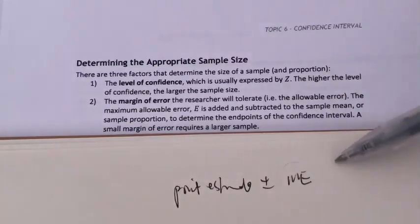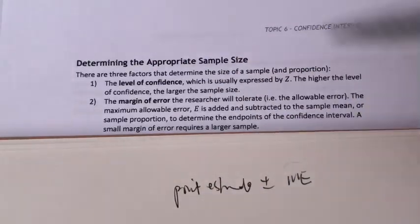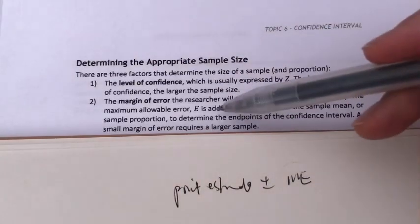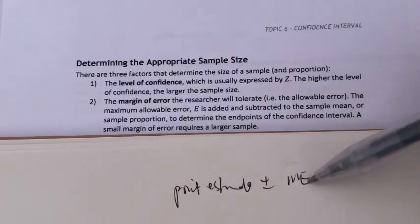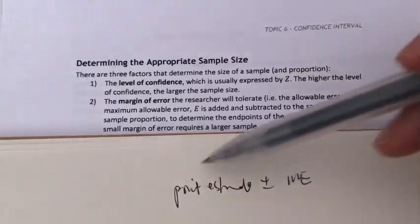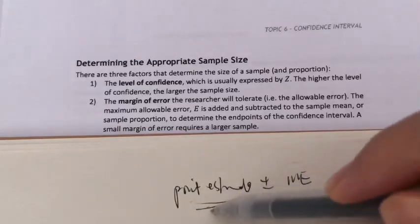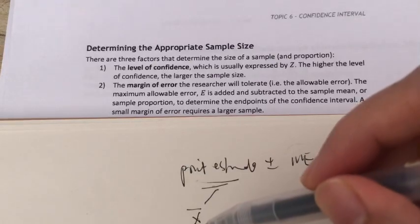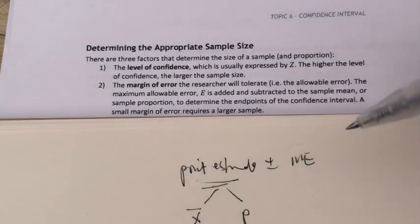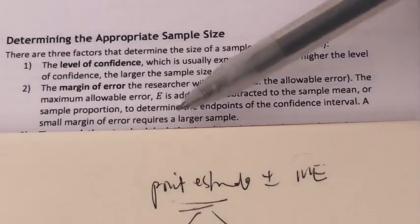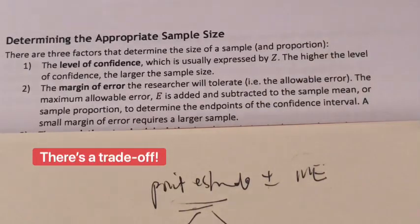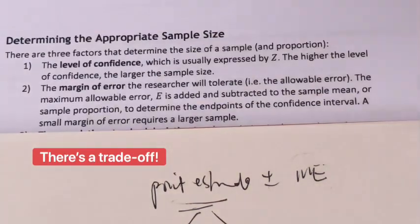It's called the margin of error. The margin of error, or E — sometimes written as E or ME — is added and subtracted from our sample mean or our sample proportion. Our point estimate here is either x-bar if you want to find the confidence interval for mu, or p if you want to find the confidence interval for pi. If you want our error to be small, then we require a large sample size. So if you want to make our sample size smaller, for whatever reason, we need to be able to tolerate a much larger error.